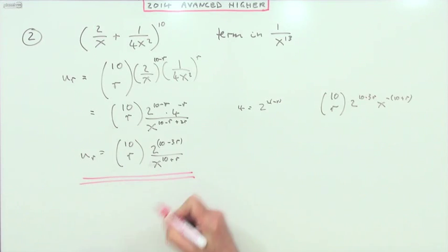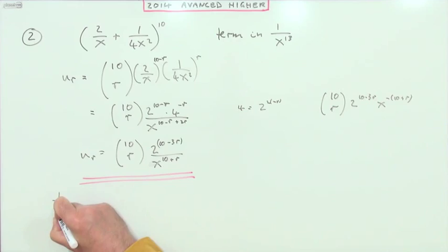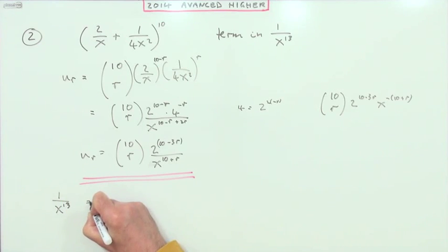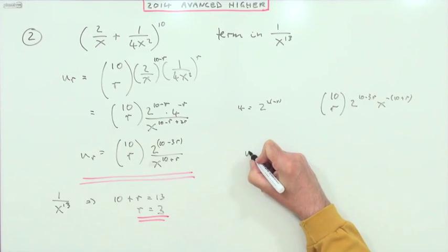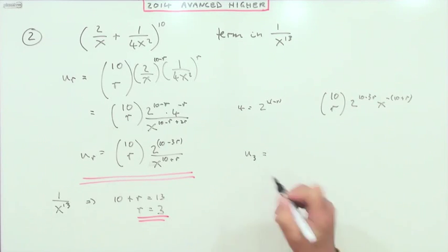So there's the general term. And then if I've got the term in x to the 13, that means that 10 plus r must make 13, so r equals 3.